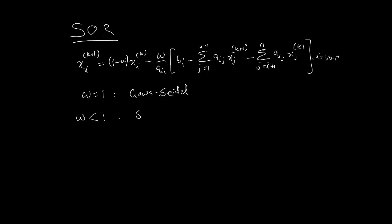When omega is less than 1 we call it successive under relaxation. Similarly, when omega is greater than 1 and by the way omega is limited to being between 0 and 2, if omega is greater than 1 and of course less than 2, we call that successive over relaxation, or SOR, and that's why this method is called SOR and not SUR.